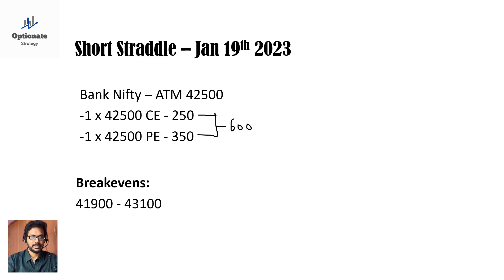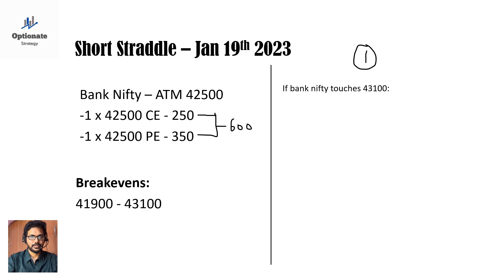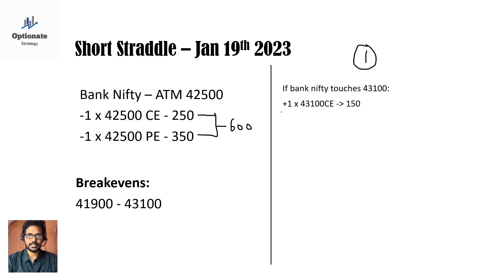Now we execute the extension adjustment. The first adjustment: when Bank Nifty touches either break-even — 43100 or 41900 — you must do your first adjustment. When Bank Nifty touches your break-even, you buy one lot at that break-even strike price. You don't need to worry about which premium that strike is trading at — whether 150, 200, or 300 — just buy one lot there.